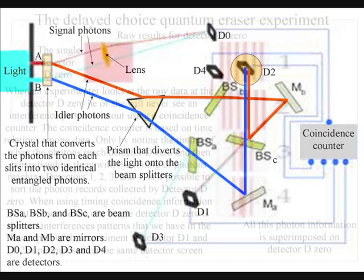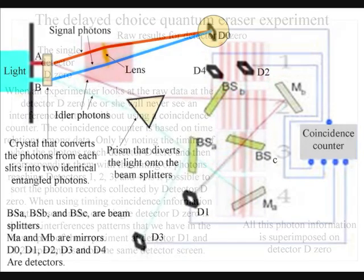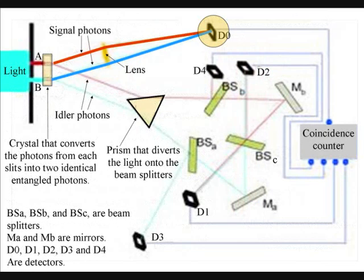When an experimenter looks at the raw data at the detector D0, he or she will never see an interference pattern without using the coincidence counter. Therefore, it is very important to understand how this device works. The coincidence counter is based on time relations among data.